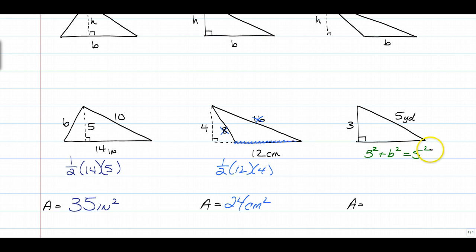It's our good buddy, the Pythagorean theorem. So 25 minus 9, B squared is going to give us 16. So the base is 4. So then we're just going to do half the base times the height of 3, and we get 6 yards squared.